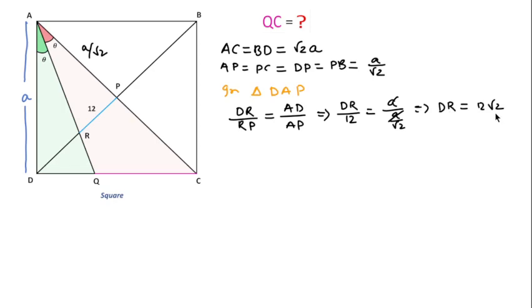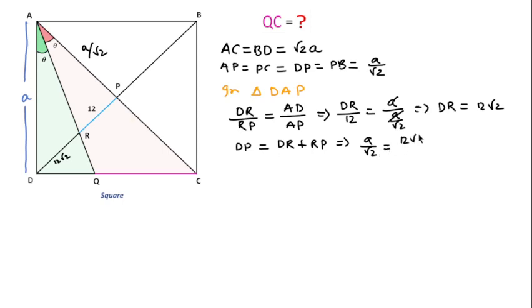Since DR = 12√2, we can write DP = DR + RP. DP = A/√2, DR = 12√2, and RP = 12. Taking 12 common and simplifying, we get A/√2 = 12√2 + 12, which gives A = 12√2·(1 + √2).